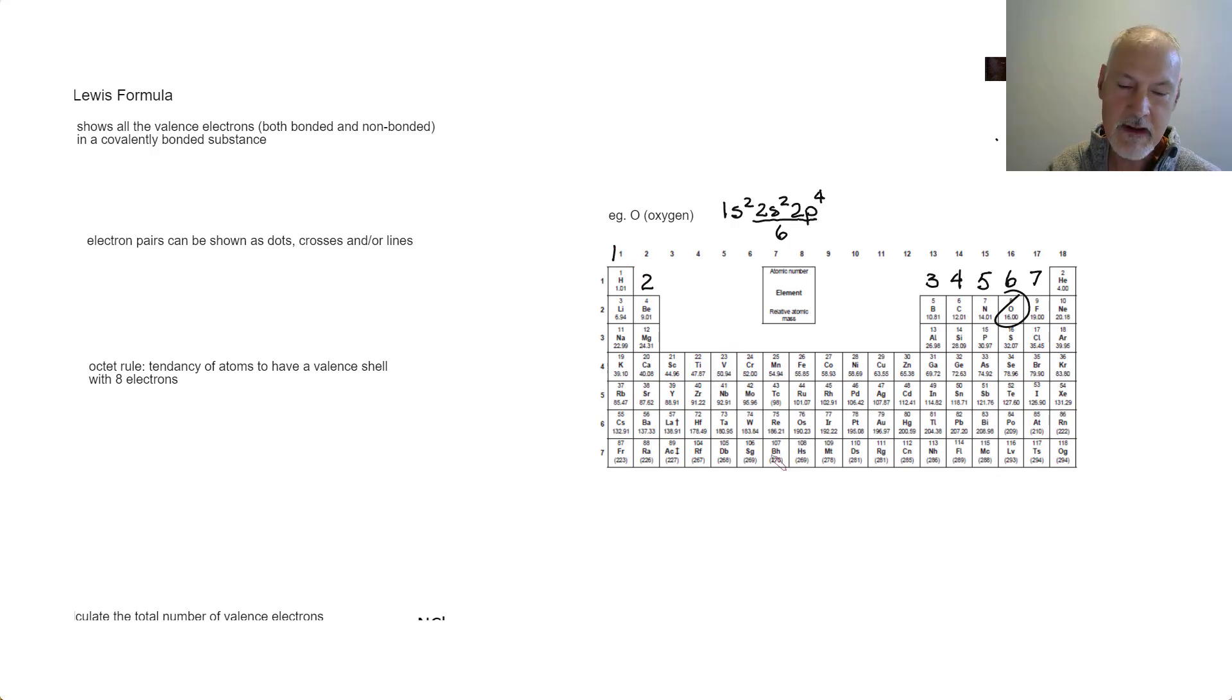So these numbers represent the number of valence electrons an atom has. So if we were to draw oxygen's picture, we can do it a couple of ways. We can show the electrons as dots. So it would have one, two, three, four, five, six.